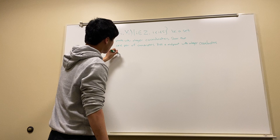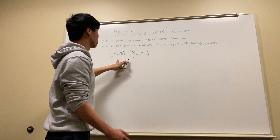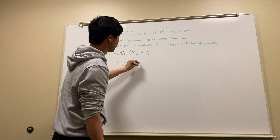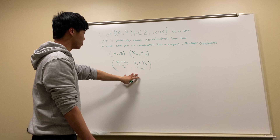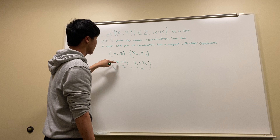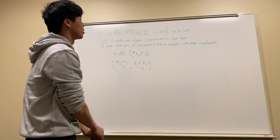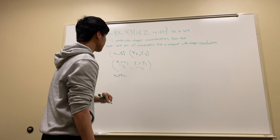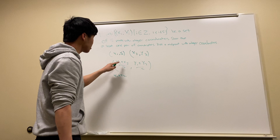To apply this, we need to consider what a midpoint is. With two points (x1, y1) and (x2, y2), the midpoint formula is (x1 + x2)/2 and (y1 + y2)/2. We're looking for a midpoint with integer coordinates, so x1 + x2 divided by 2 must give an integer value. For that to happen, x1 + x2 has to be even, because an odd number divided by 2 cannot possibly be an integer.